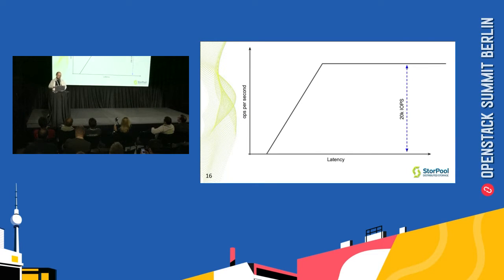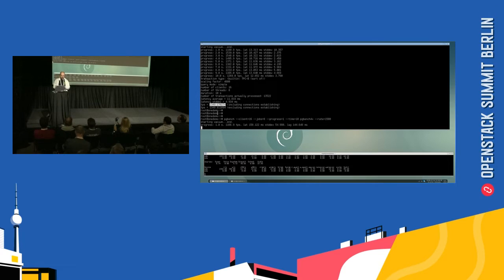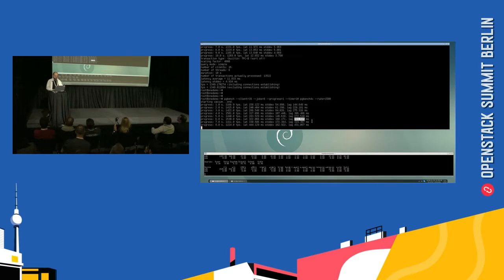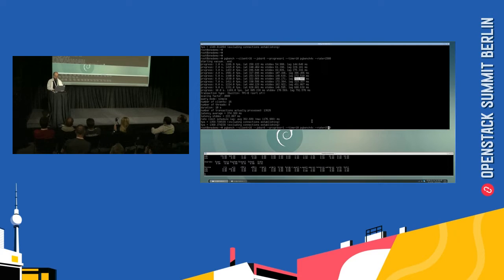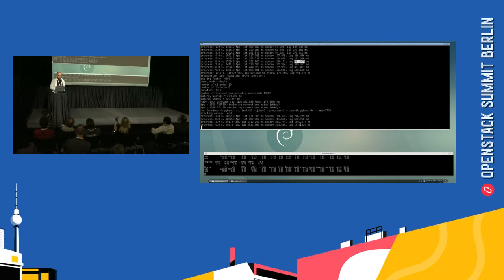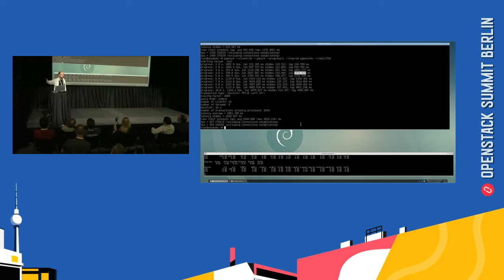So the storage volume underneath has 20,000 IOPS, and the database on top does 1,400 transactions per second. If we ask that database to do 1,500 transactions per second — what happens is you see the lag column increase. A queue of operations piles up and now database transactions are not taking a few milliseconds, they're taking four or five seconds. A few minutes later they will be taking a lot more, because we are asking this database to do more than it can do.